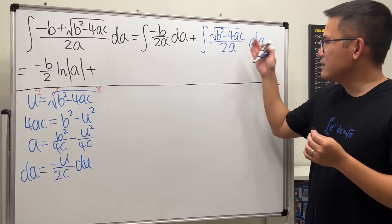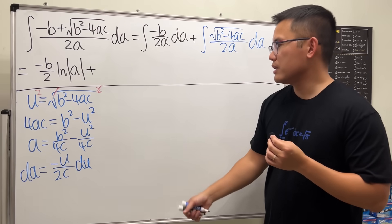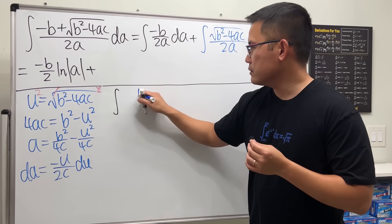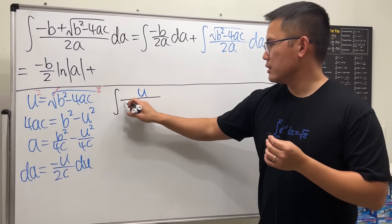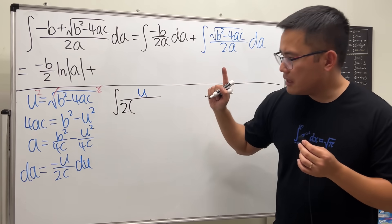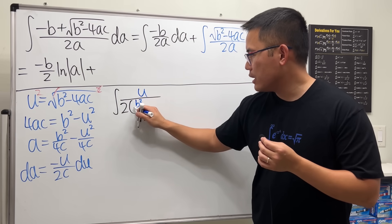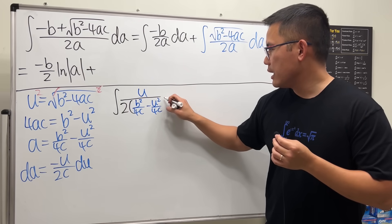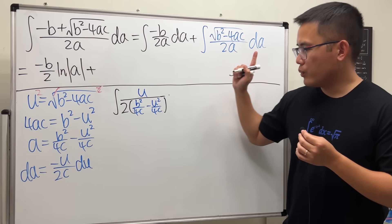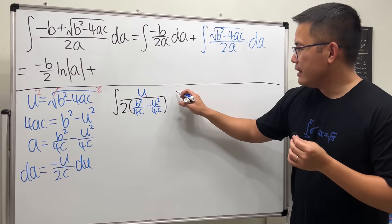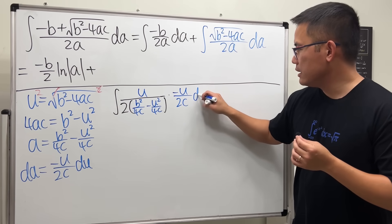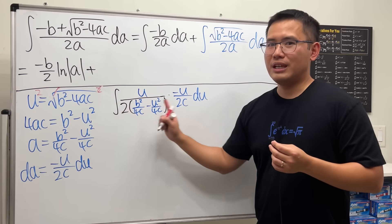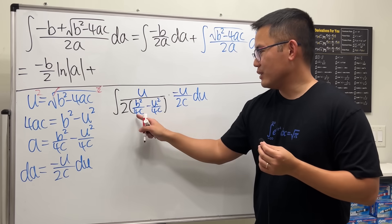With the substitution done, we convert the integral to the u-world. The integrand becomes u/(2a), where a = b²/(4c) − u²/(4c), and we multiply by da = −u/(2c) du. This works out nicely: 2 times 2c is 4c, and the 4c terms cancel.